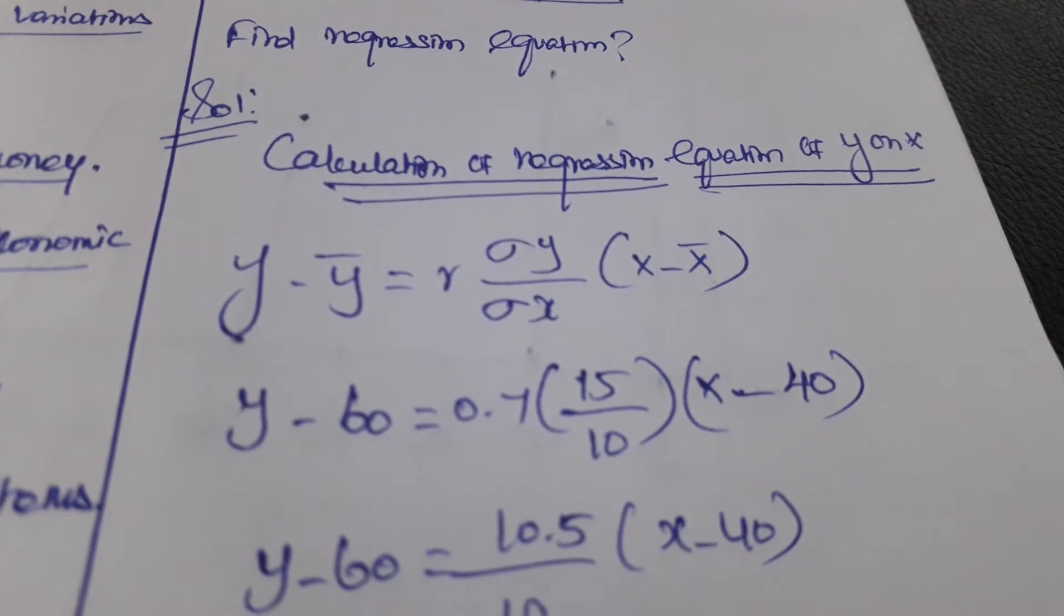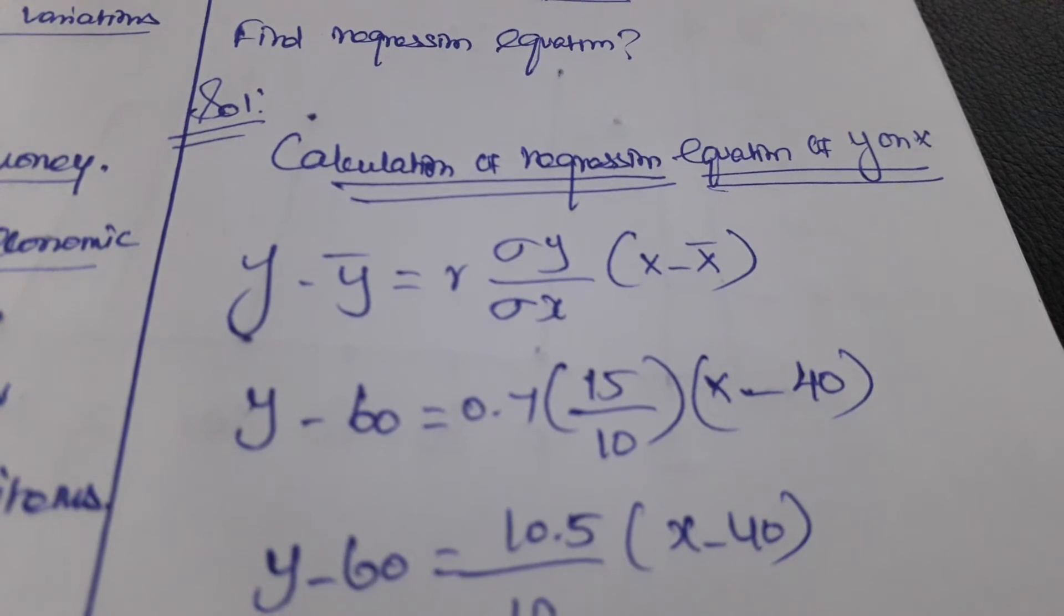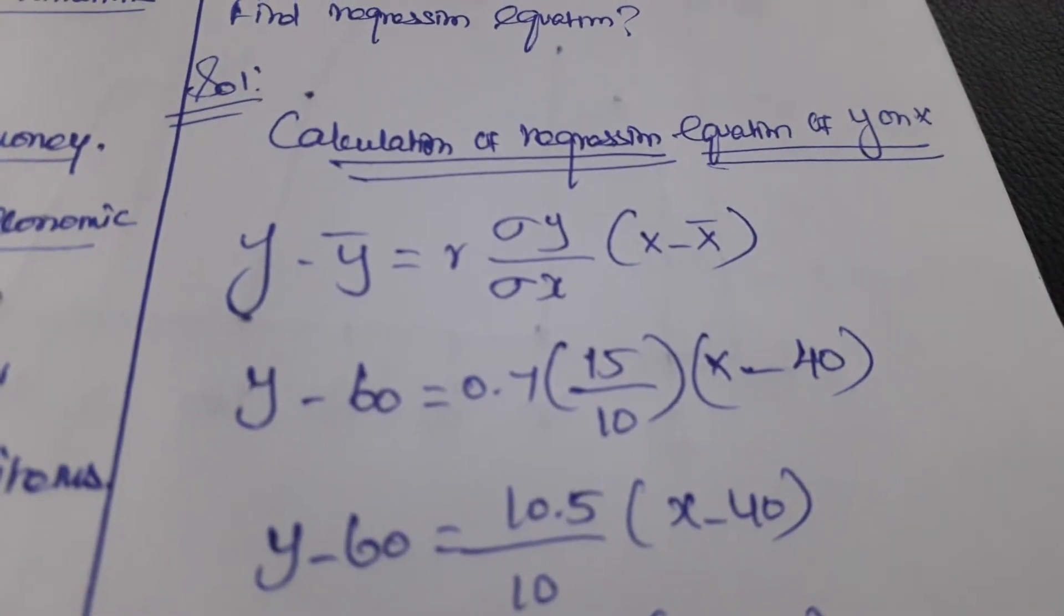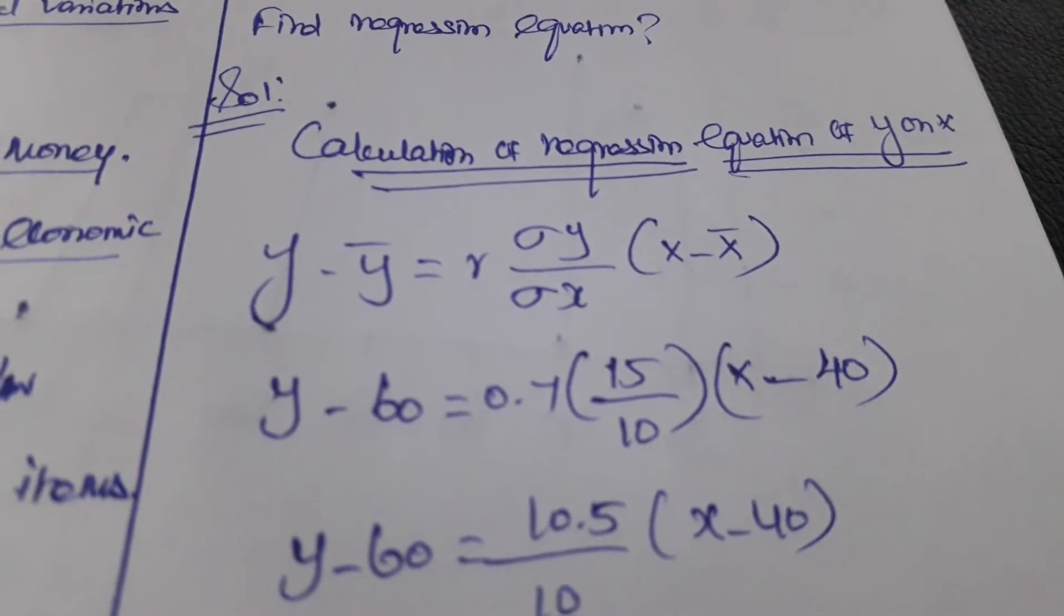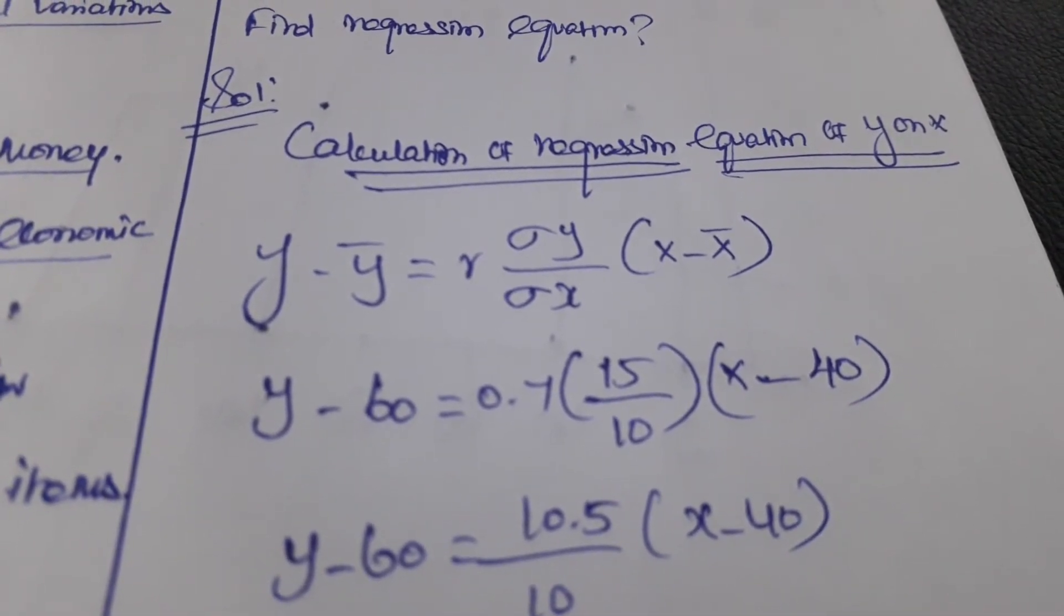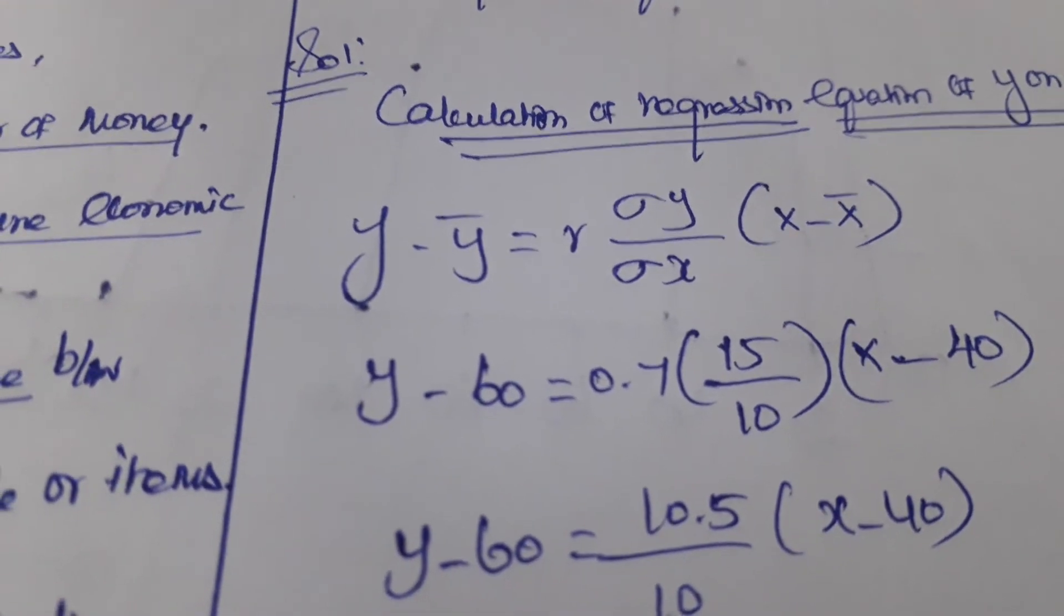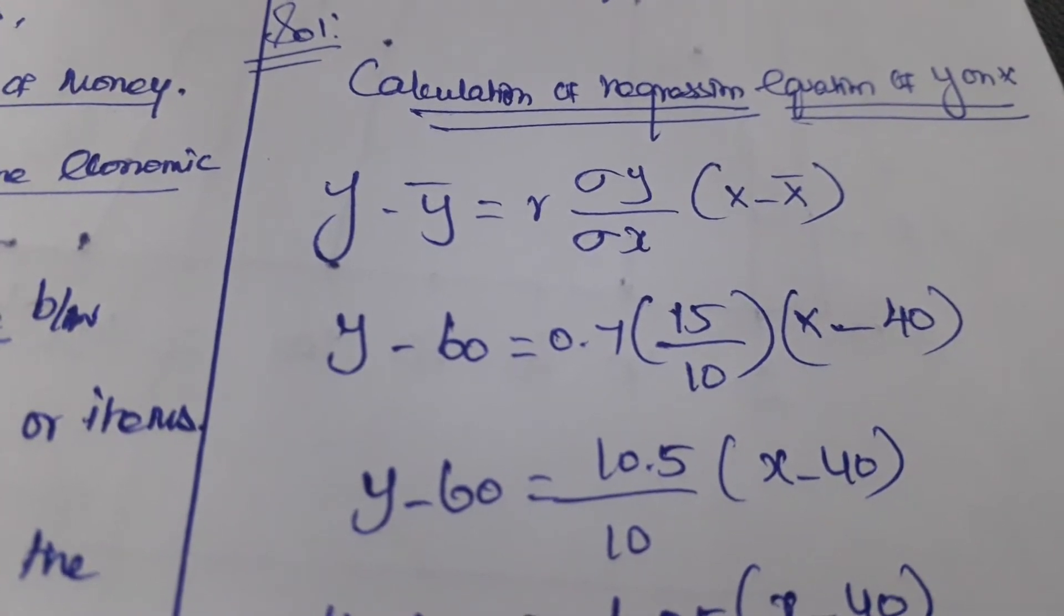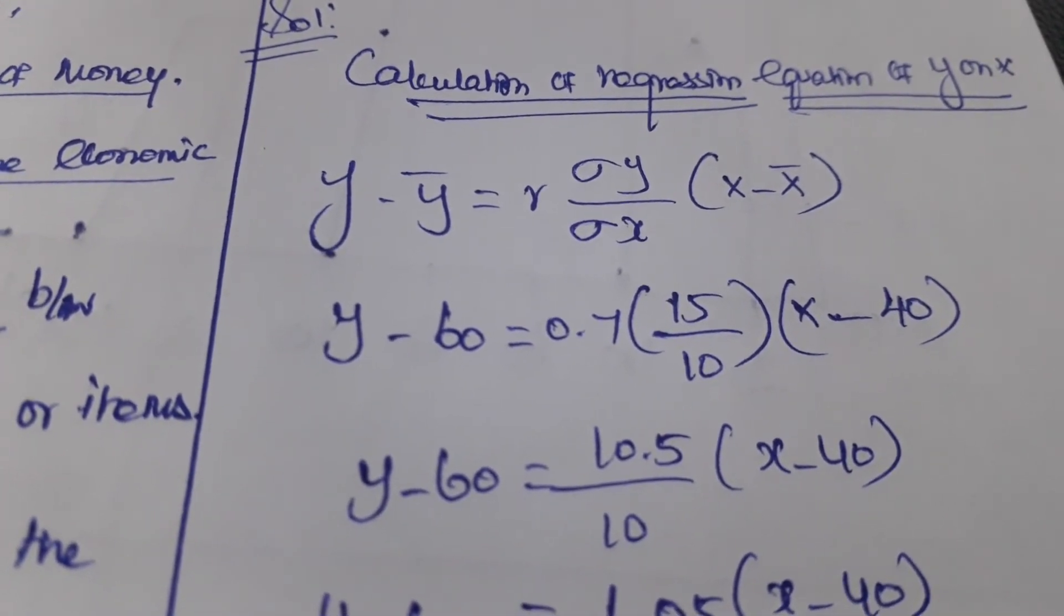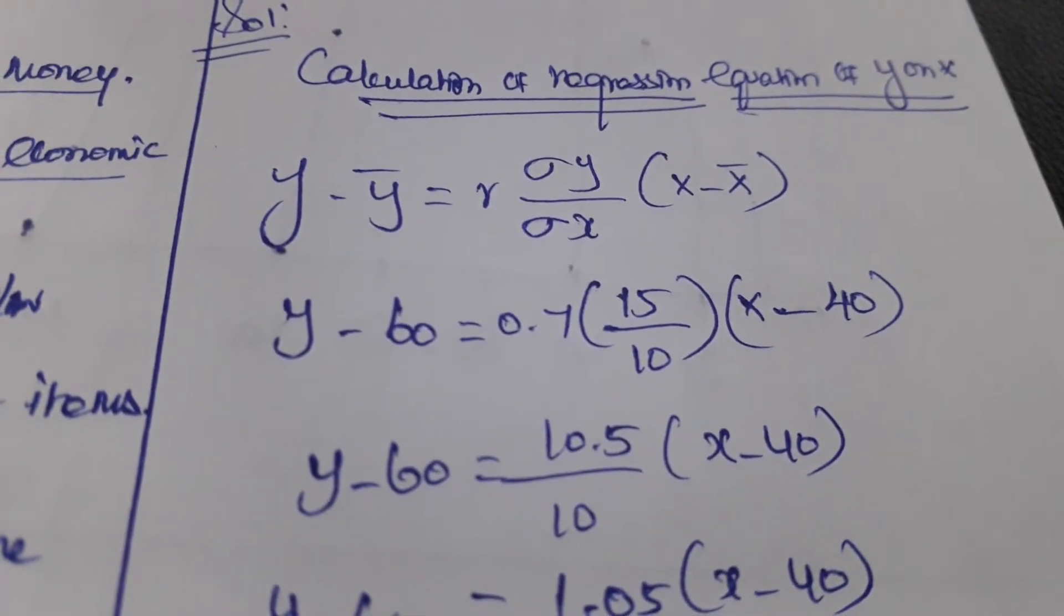For Y on X we use Y, sigma Y, and Y minus Y bar. We need to take the values from the table. Y bar means mean of Y, that is 60, so we put 60. 0.7 is the R value, standard deviation of Y is 15, standard deviation of X equals 10, and X minus mean of X is 40.